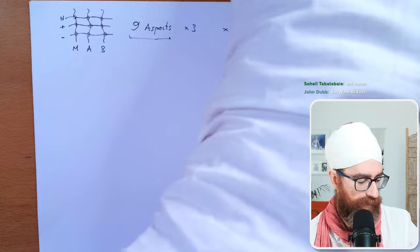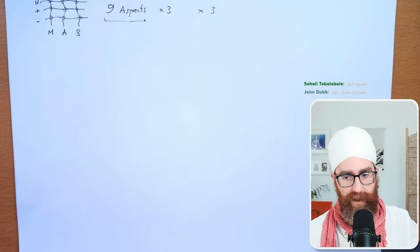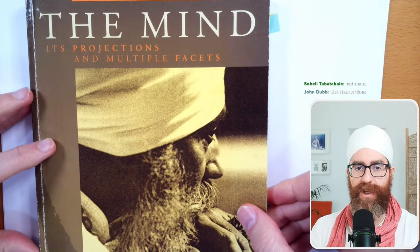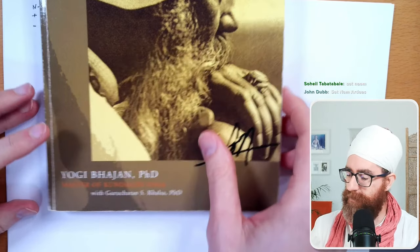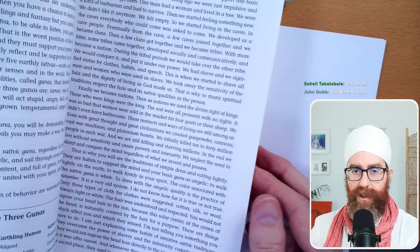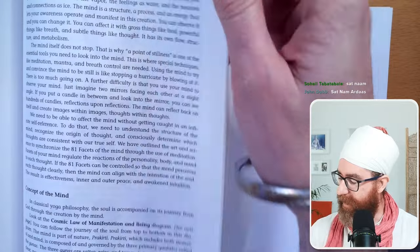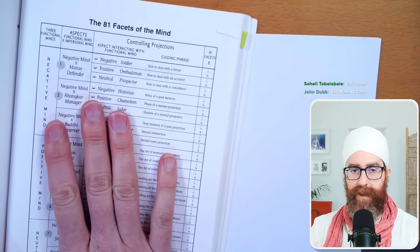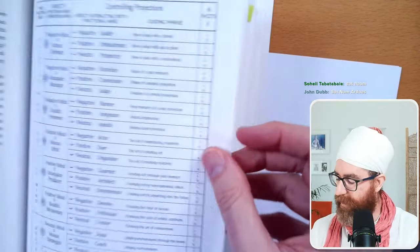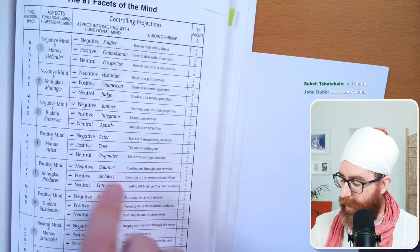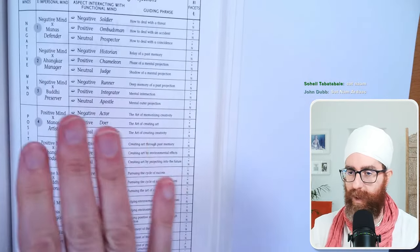If you want more information, this book is called 'The Mind: Its Projections and Multiple Facets,' written by Guru Charan Singh using lectures from Yogi Bhajan. The first part of the book is lectures, then from the middle onward come the 81 facets. At the end there's a meditation guide — for every one of the 27 and nine aspects there is a meditation we can practice.